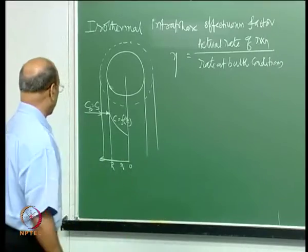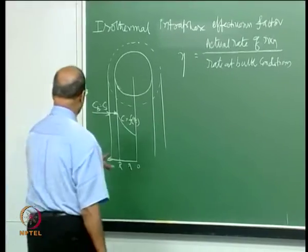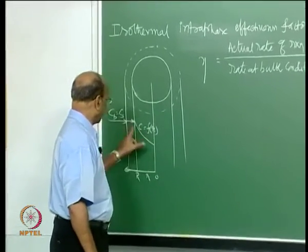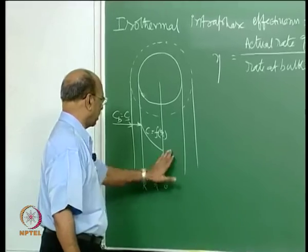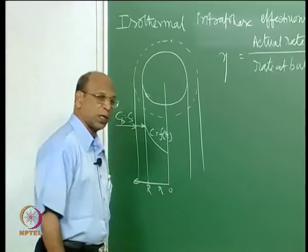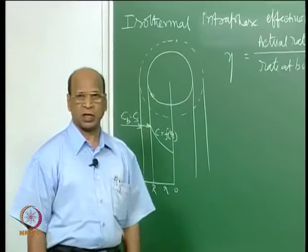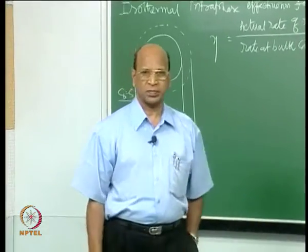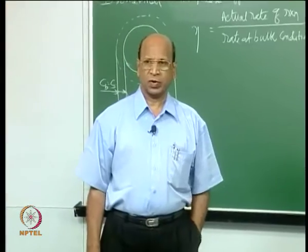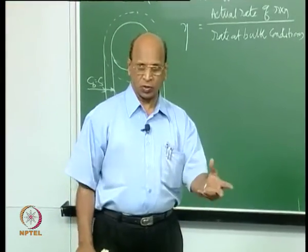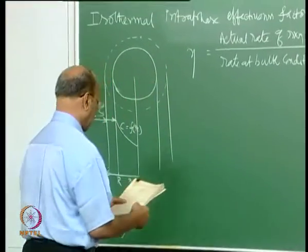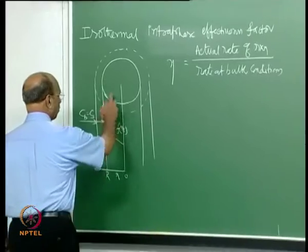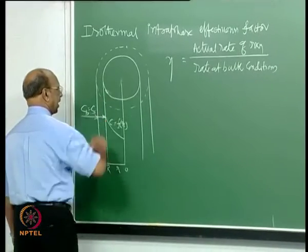When deriving the equation for concentration of reactant inside the particle, you will get a parameter called phi — the Thiele modulus — when solving the equation as a non-dimensional parameter. The first thing is to find out the concentration gradient.